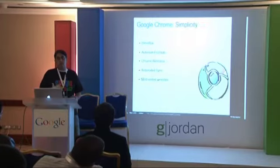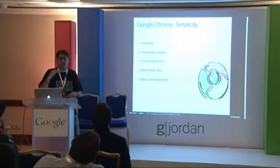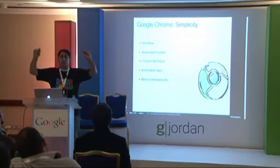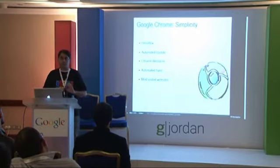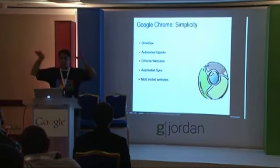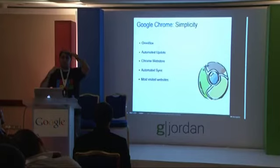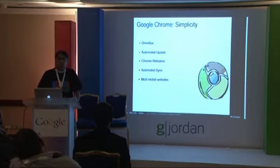The other thing we're trying to do with Chrome is to be simple. There are several features in Chrome — one of the things that was new is Omnibox. If you look at Chrome's address bar, you can see a search bar at the same time. So instead of going to two different bars, you can just basically search in the same bar. We've also added Automatic Update and Automated Sync.